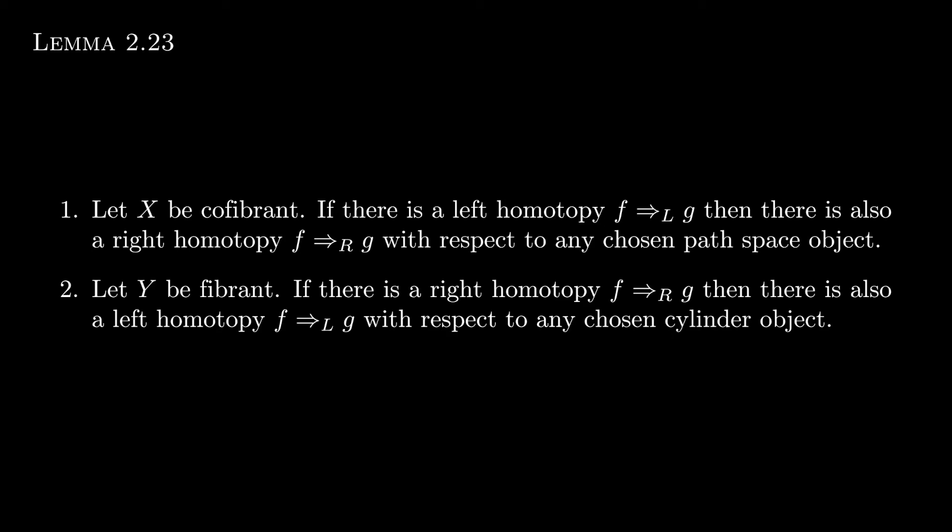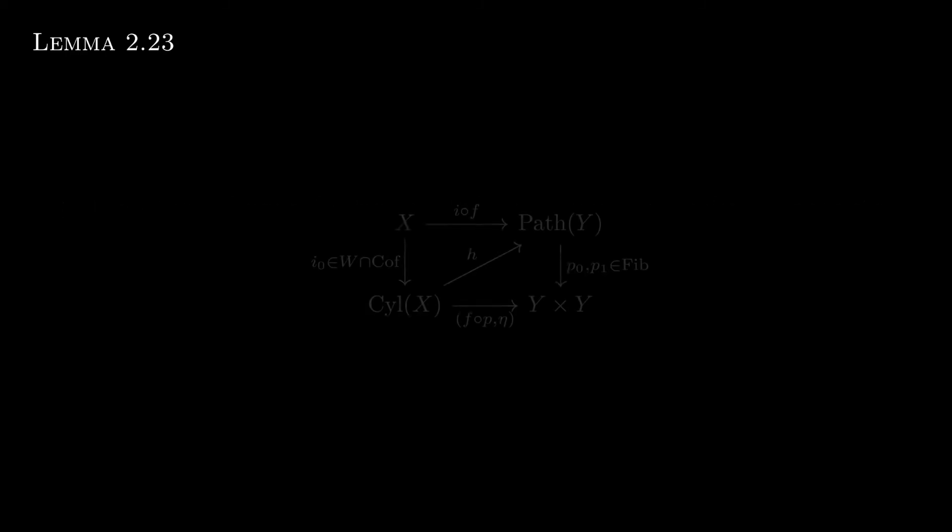We will prove the first case where x is cofibrant, and the other is again just dual. So we have this commuting diagram.